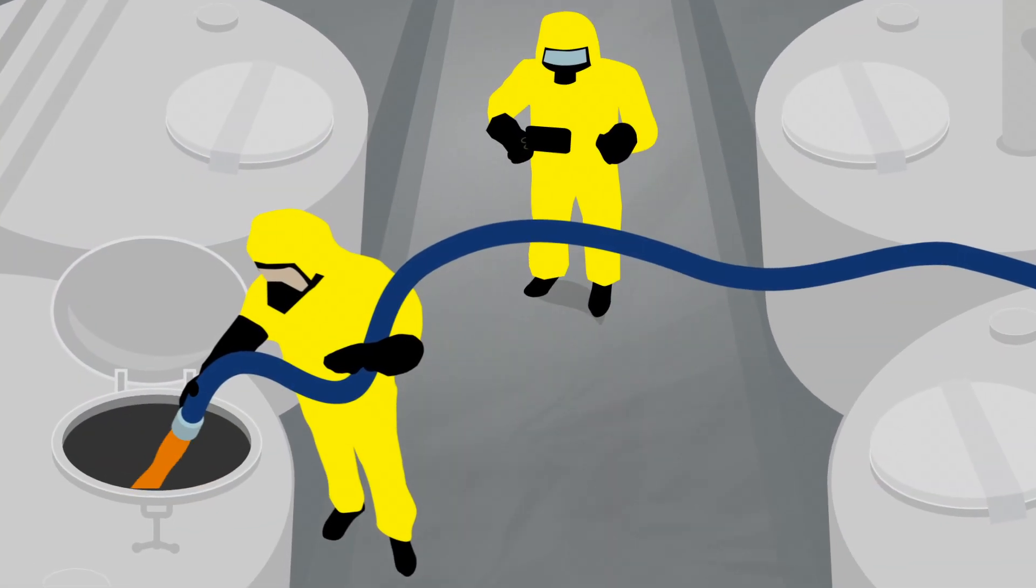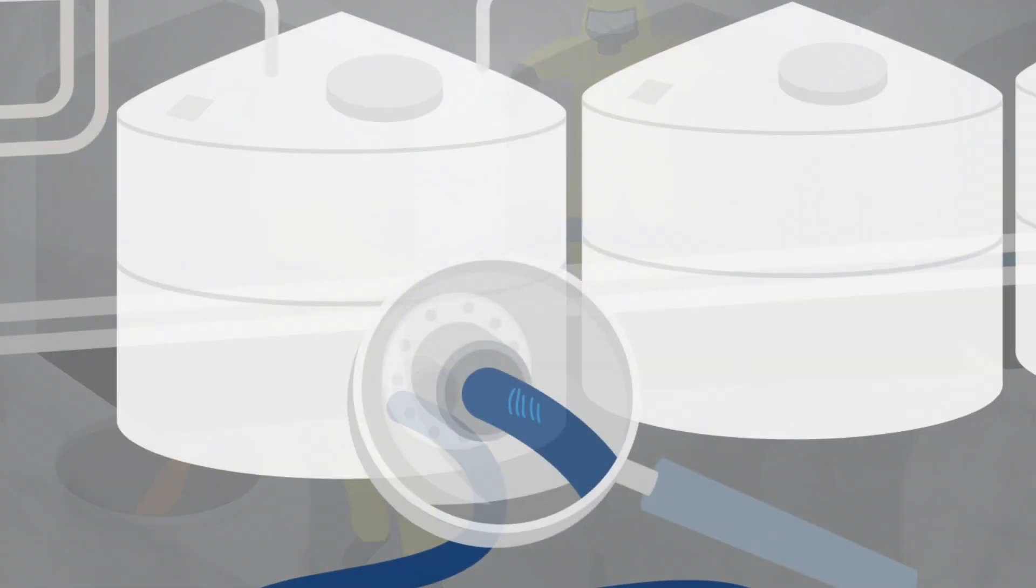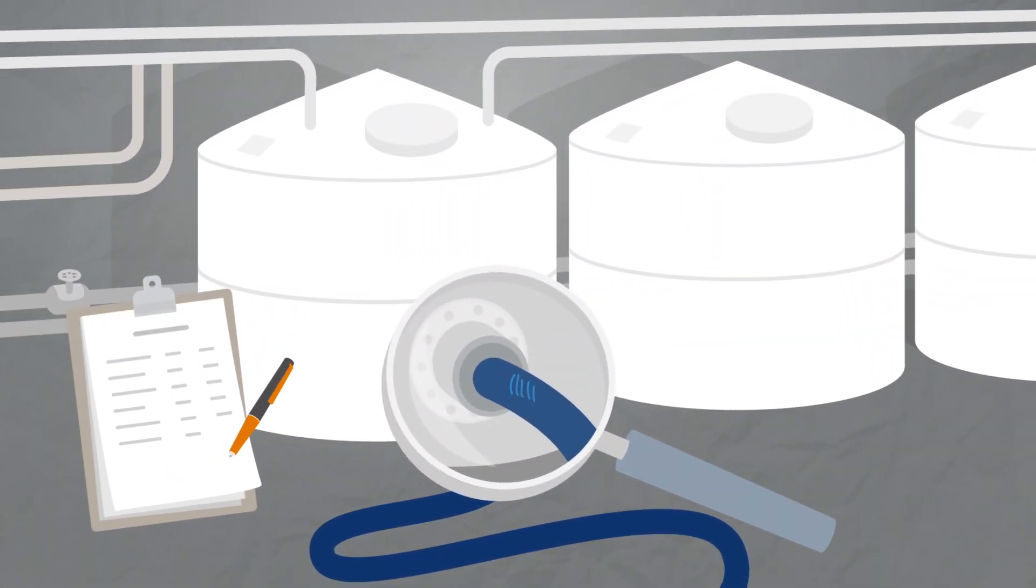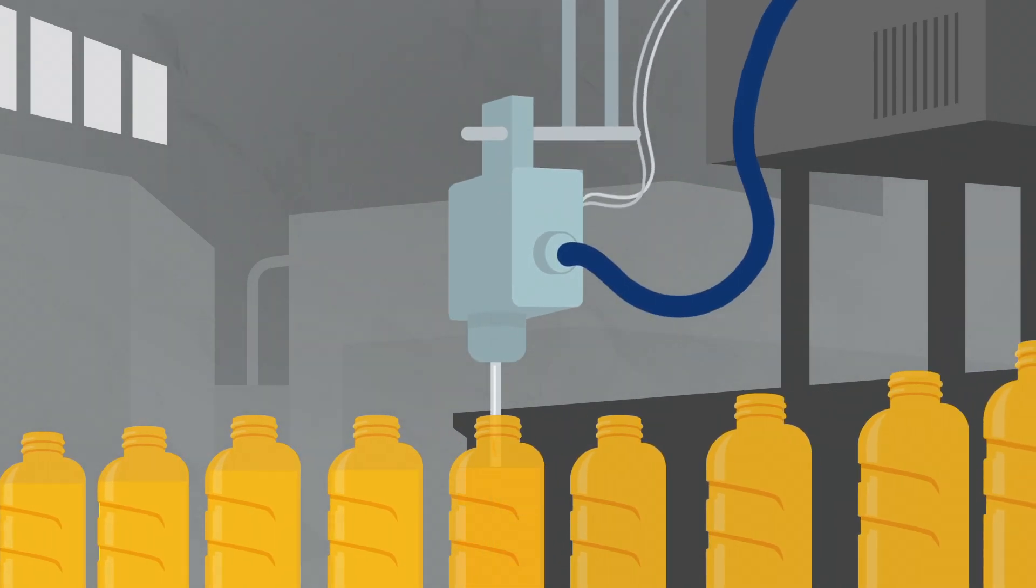The wrong hose is used by accident which causes contamination of the product. A notification of damage to the hose disappears in the paperwork or it is uncertain that the hose in use is actually certified.